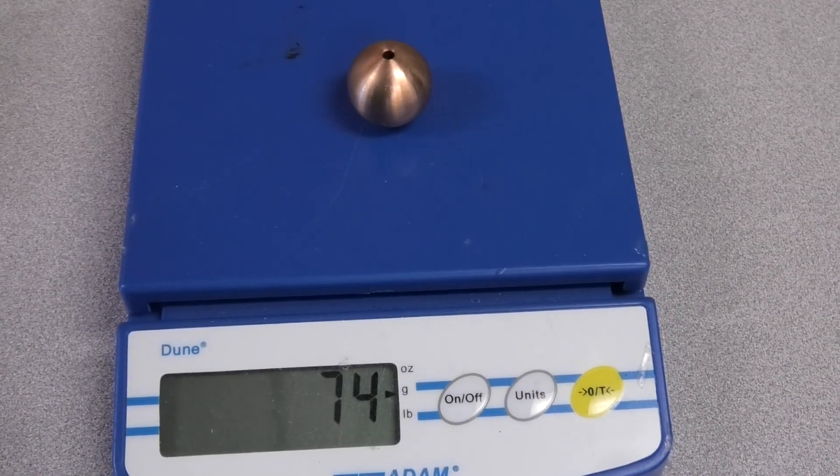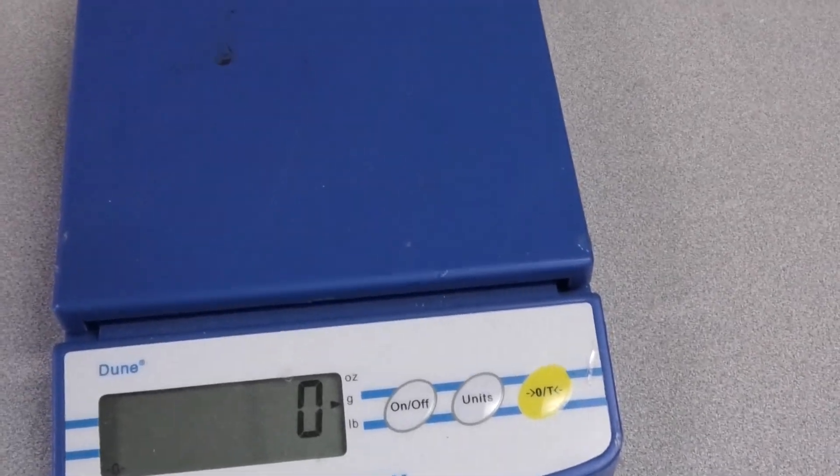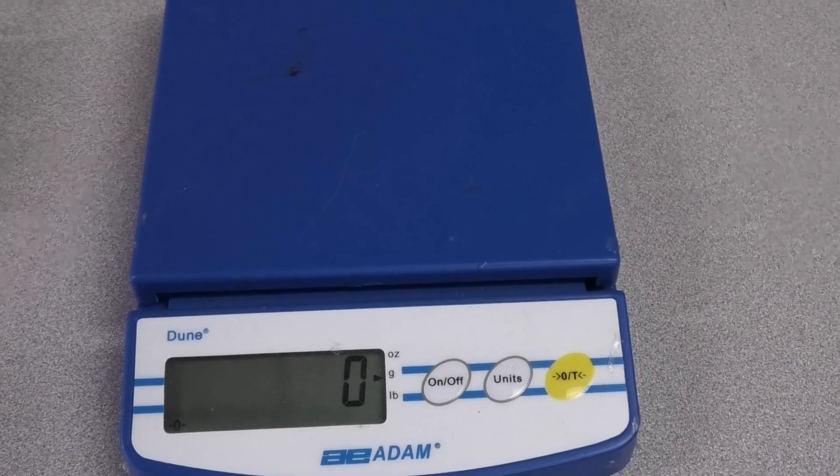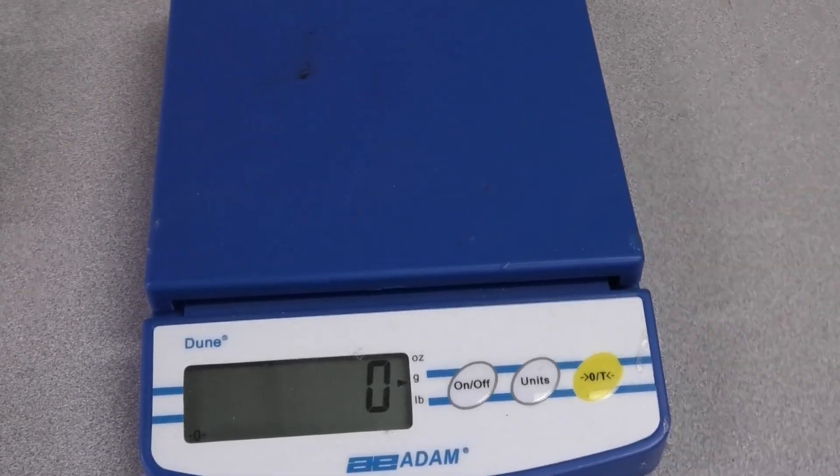So we have the masses of each one of these and we also have the amount of volume that it displaced. So we can now use mass divided by volume to find the density of these objects.